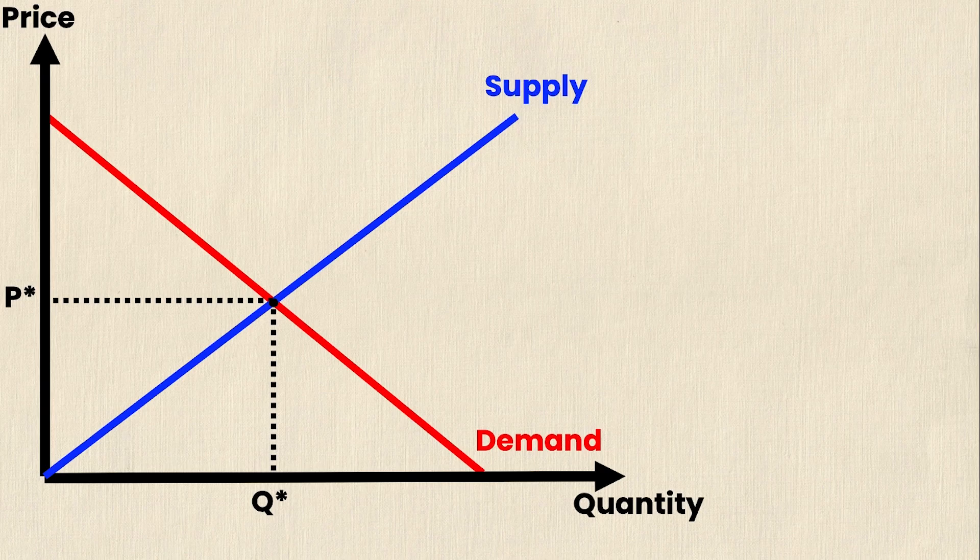So we'll start off with the general supply and demand curve, our axes, our supply and demand lines and then we'll label everything.